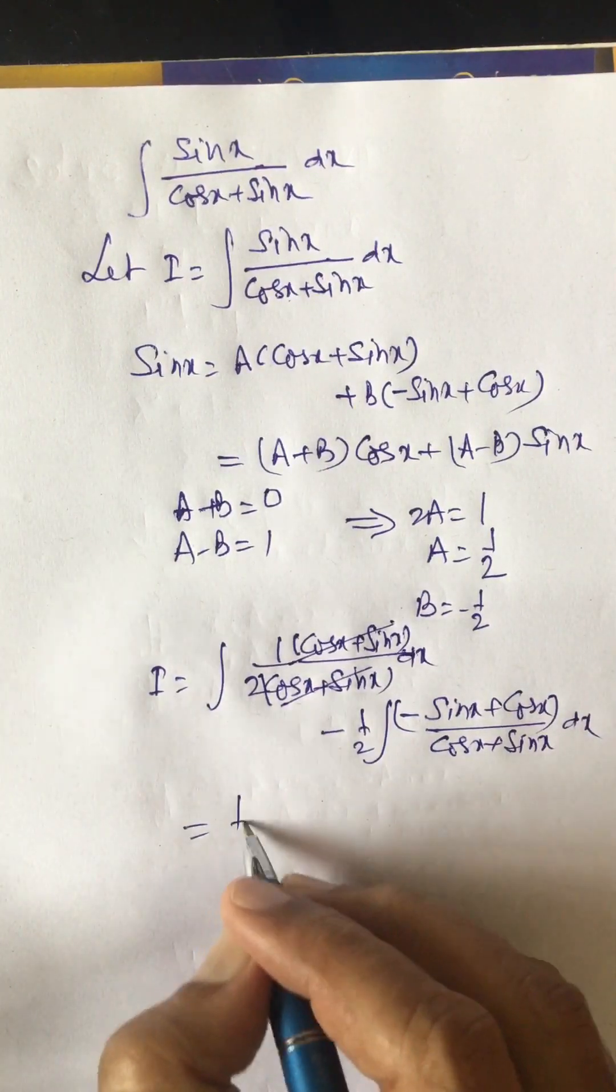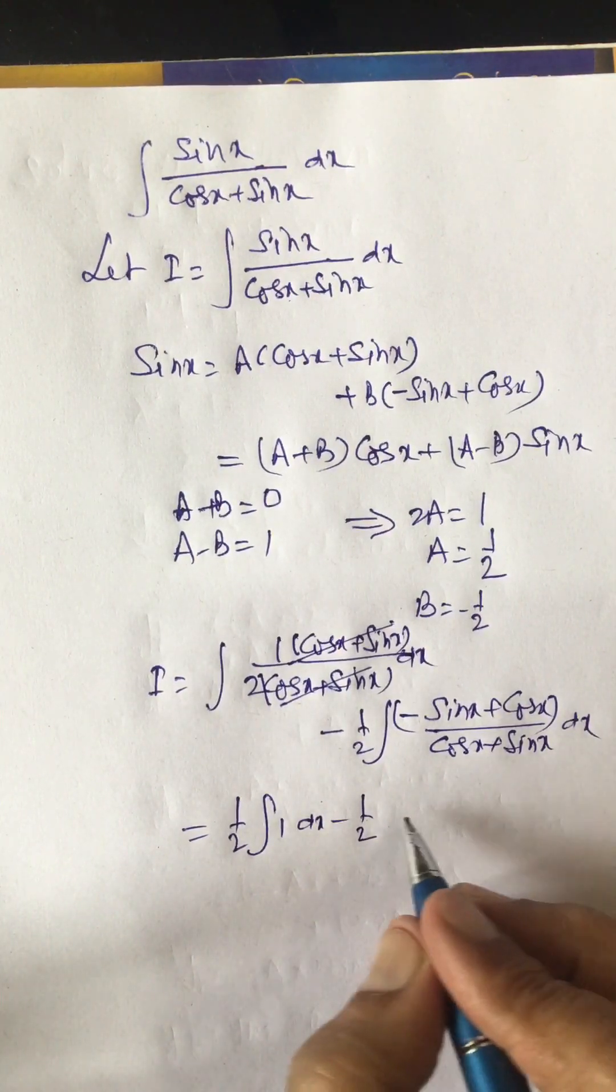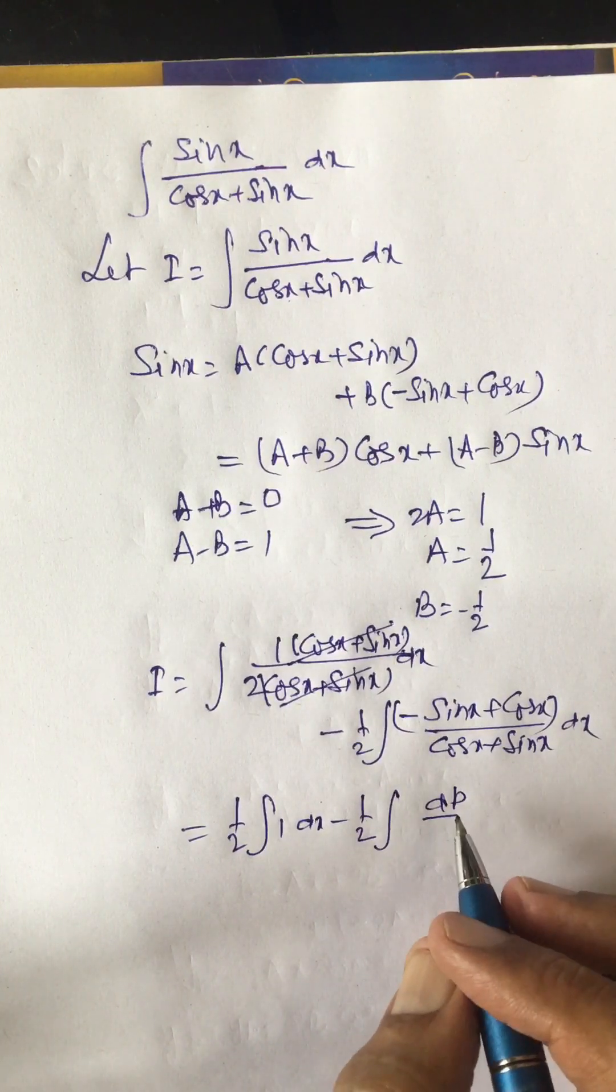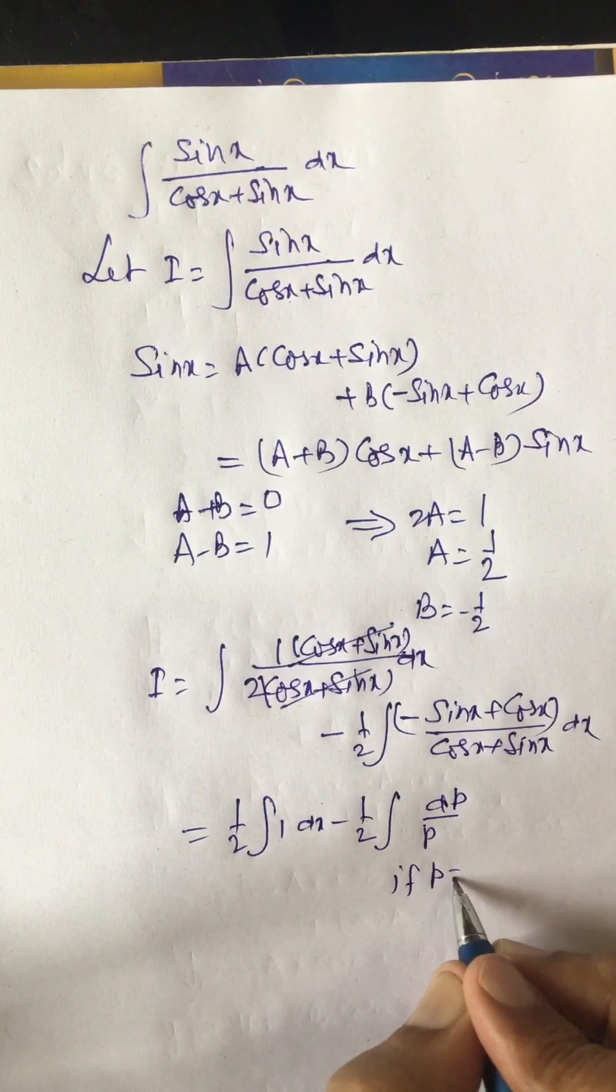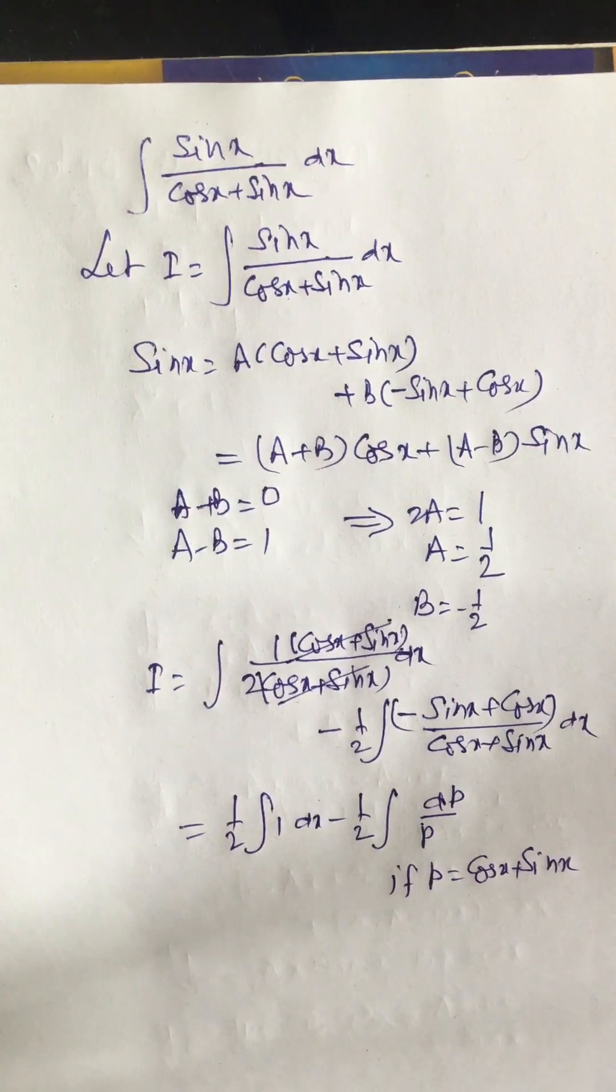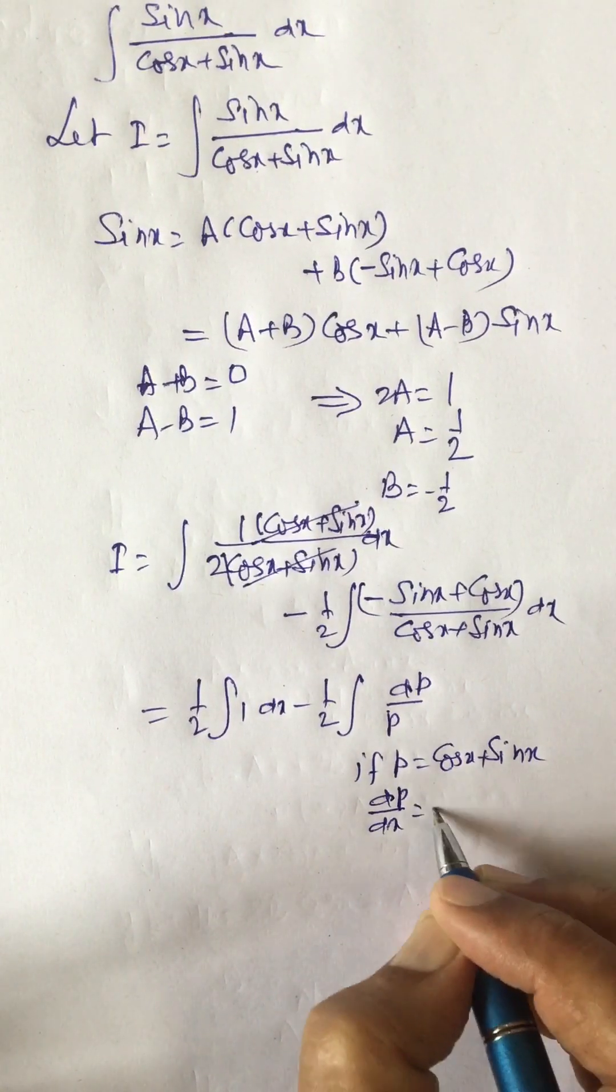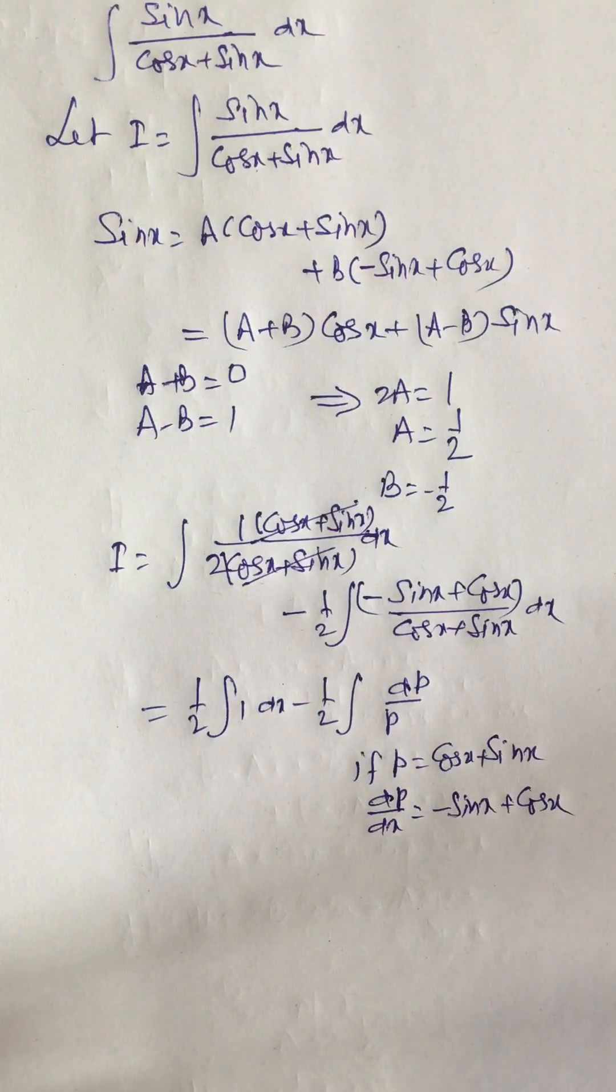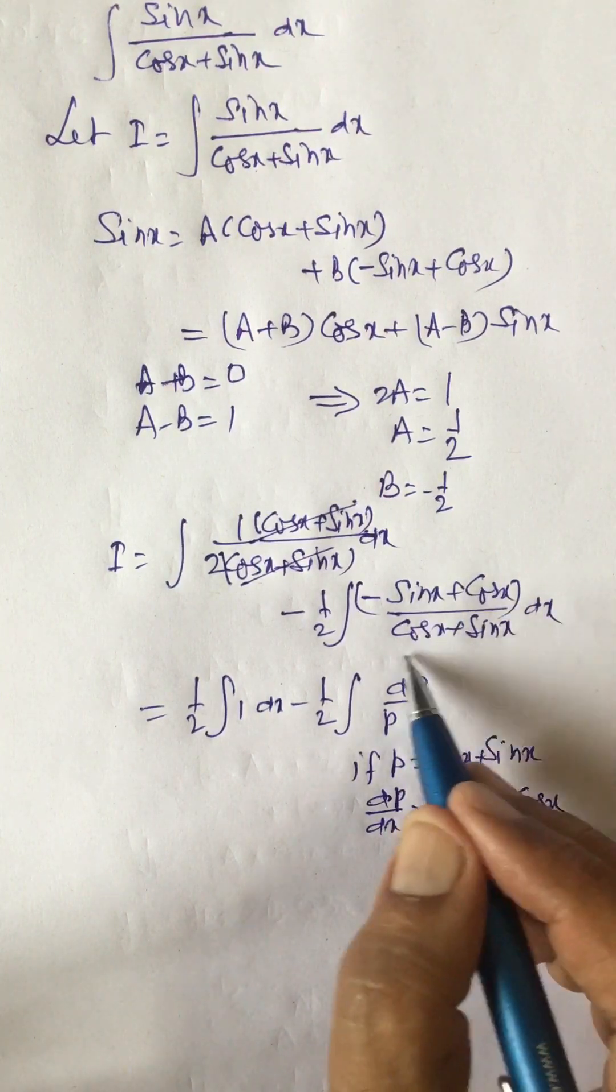We are left with integral 1 by 2 times 1 dx minus 1 by 2 integral dp by p, if p equal to cos x plus sin x. Then dp upon dx equal to minus sin x plus cos x, so dx times this term is dp.